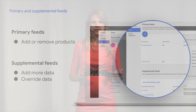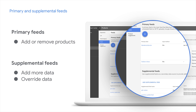The feeds tab is now a one-stop place for you to manage your product data, independent of whether you submitted it through the content API, a spreadsheet, or a text file. Here you can see a screenshot of how the new feeds tab looks like. At the top you can see the primary feeds, which contain the main product data information you provided. At the bottom you can see the supplemental feeds. A supplemental feed is a secondary feed used to add more data or to override existing data.